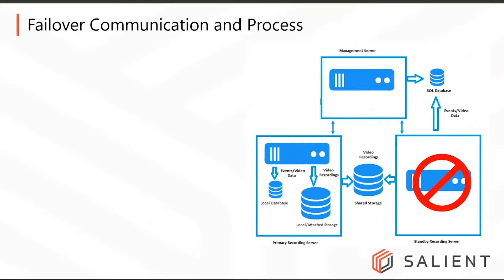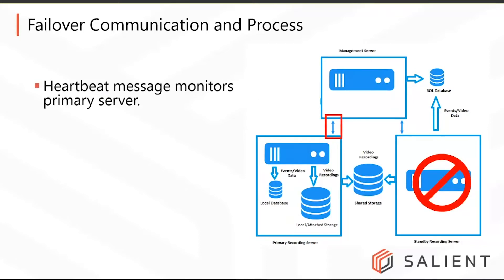When everything is running fine, the management server communicates with the primary recording server via heartbeat messages — think of it as the management server pinging the primary recording server. As long as the primary recording server responds to that ping, we know it's up and running. The moment it doesn't respond, we know the primary recording server is down and the failover process needs to begin.